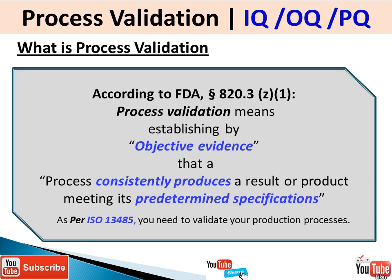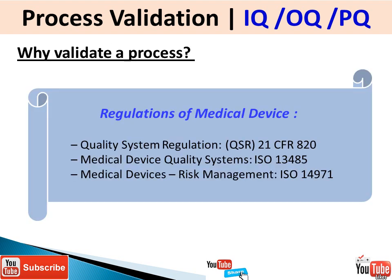Predetermined specification basically refers to your product specification or process specification that, if met, results in a product that meets your customer's needs and intended use. Process validation is a requirement per ISO 13485 — you need to validate your product processes. Validation is only required for processes whose output cannot be fully verified by subsequent inspection and testing. Conversely, if you can fully verify your process output, you do not need to validate the process.